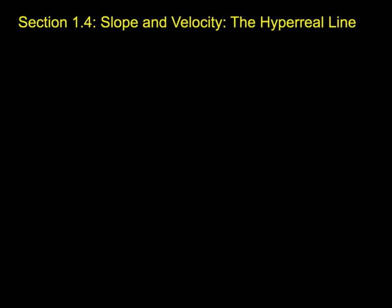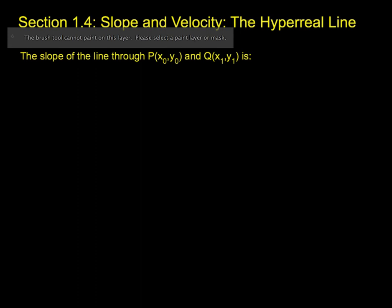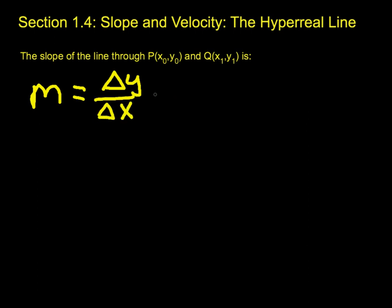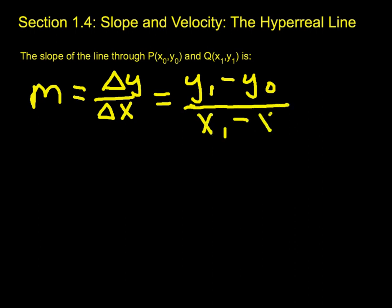In the previous section, we talked about slopes of lines. For instance, if we want to know the slope of a line through the points (x₀, y₀) and (x₁, y₁), then the slope equation is given by m equals change in y divided by change in x, which explicitly is y₁ minus y₀ divided by x₁ minus x₀. Simple idea — change in y over change in x is just the difference in y divided by the difference in x.